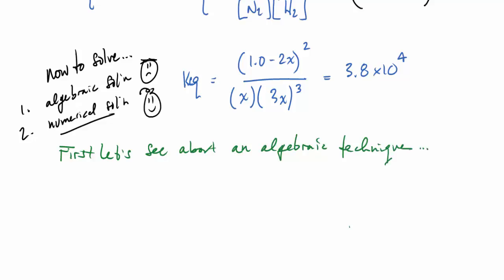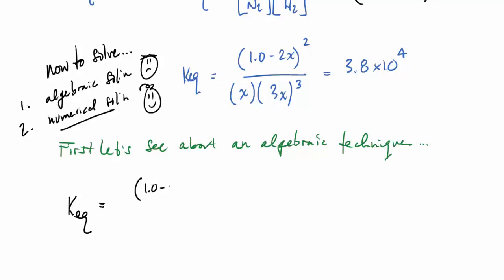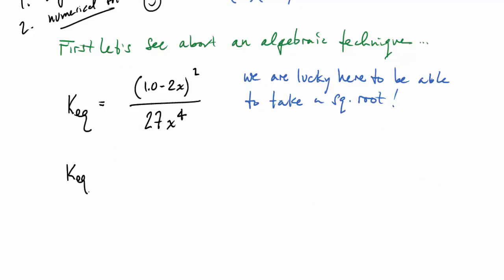And actually you're quite lucky if you look closely to be able to take a square root on both sides of this. There's a square and a fourth power. So if you take a square root on each side, this root of KQ equals these guys over here, and this is now quadratic. It doesn't look quadratic, but if you look closely you'll see it is in fact a quadratic equation.